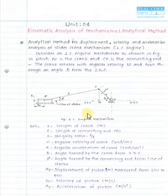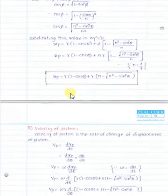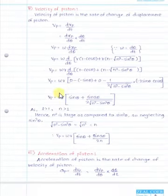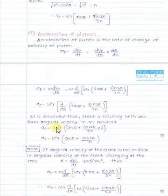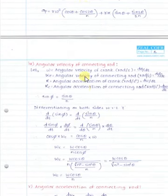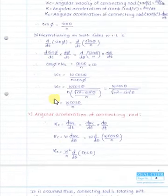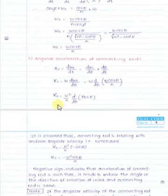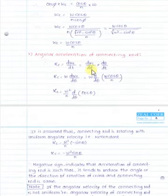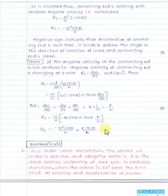To summarize the analytical method: we have derived the displacement, velocity, and acceleration of the piston for both cases (omega constant and omega not constant), and the angular velocity and angular acceleration of the connecting rod for both cases.